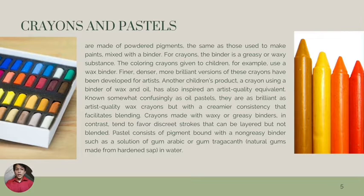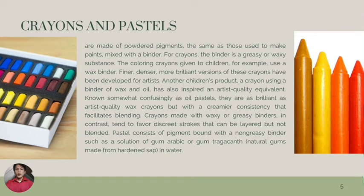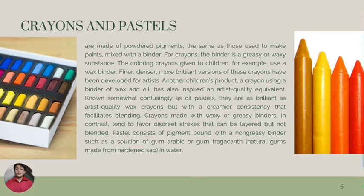Crayons and pastels are made of powder pigments, the same as those used to make paints, mixed with a binder. For crayons, the binder is a greasy or waxy substance — the coloring crayons given to children, for example, use a wax binder. Finer, denser, more brilliant versions have been developed for artists. Another children's product, a crayon using a binder of wax and oil, has also inspired an artist-quality equivalent known as oil pastels. They are as brilliant as artist-quality wax crayons, but with a creamier consistency that facilitates blending.